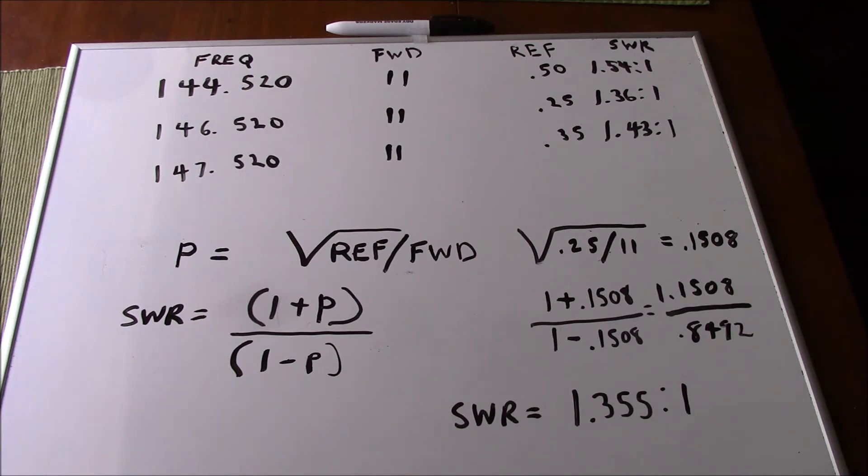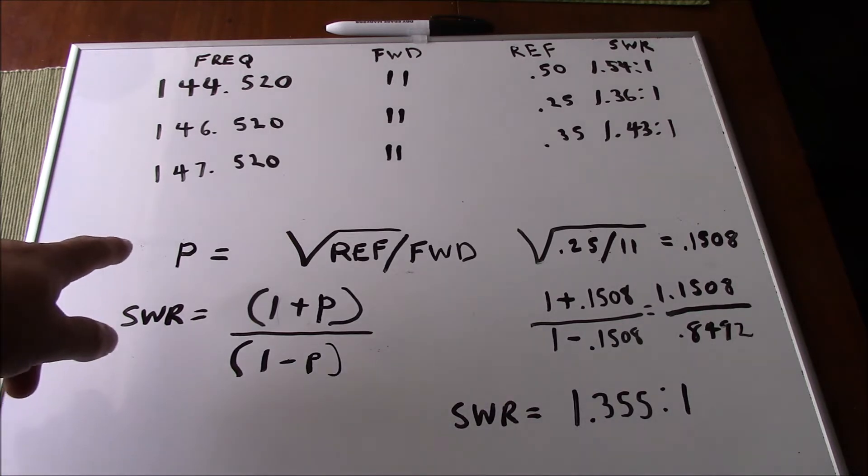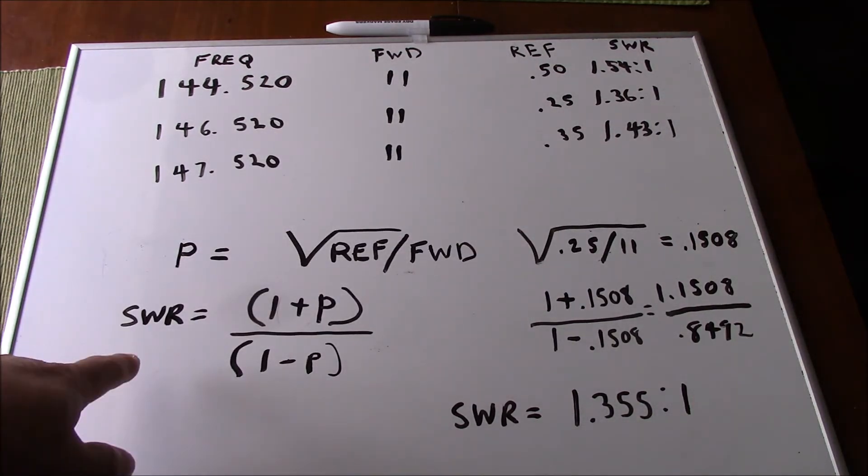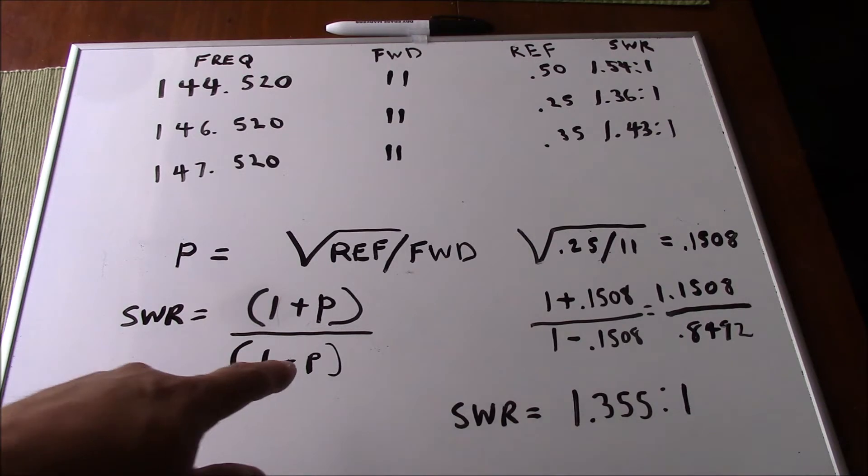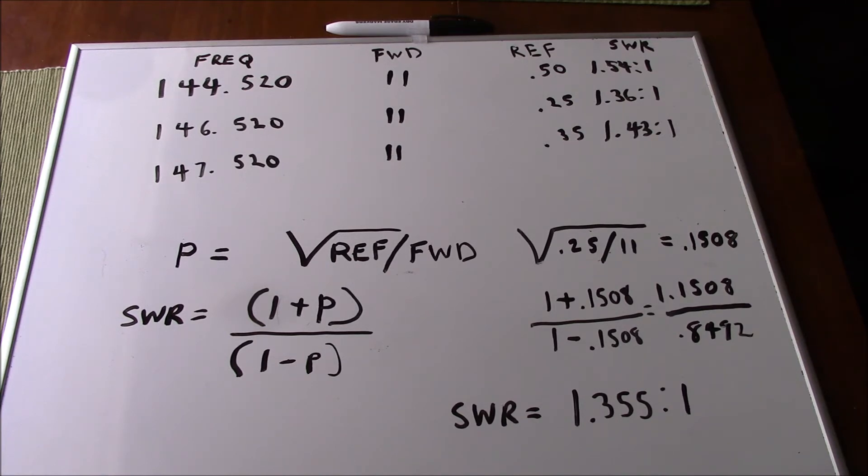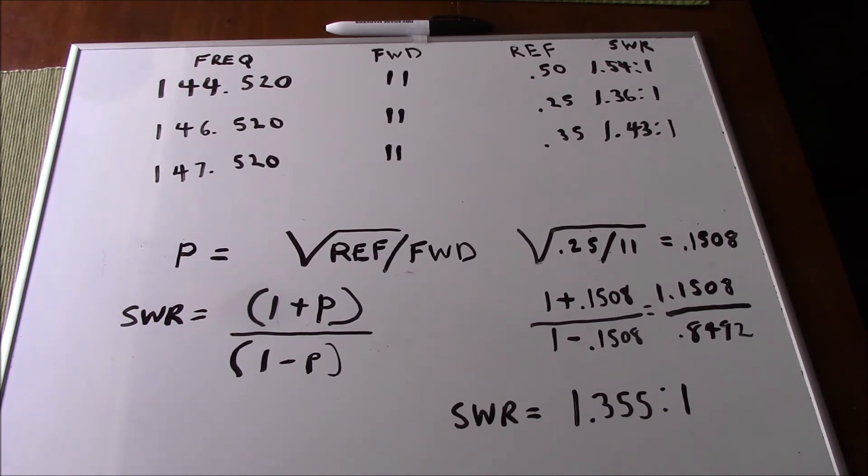If you have just reflected and forward power, you don't have a cross needle meter or what's known as an SWR meter, what you can do is you can use this simple formula here. Basically what you do is you find rho, which is going to be the square root of your reflected divided by forward power, which you can see over here. And then you can find your SWR at that point by taking 1 and adding it to rho and dividing that by 1 minus rho, which you can see right here. And then you come up with your SWR of 1.355 to 1. And if you don't feel like doing the math, if you learn how to do it without a tool, then you'll be able to do it with the tool. You can use an online app or you can actually get one for your smartphone also to where you enter in your forward and reflected power and it's going to give you a standing wave ratio.